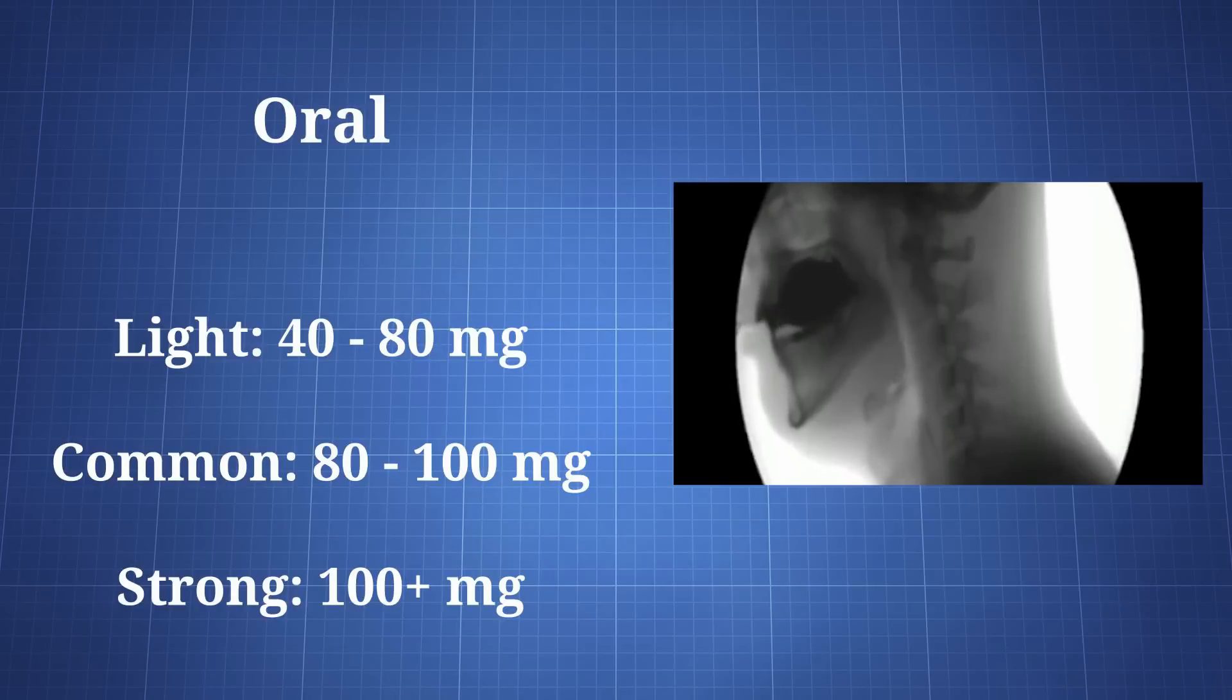6-APB is nearly always used orally. A light dose is 40 to 80 mg, a common dose is 80 to 100 mg, and a strong dose is over 100 mg. There is some variation in the reported doses, but most people report the ideal dose being between 60 and 120 mg.